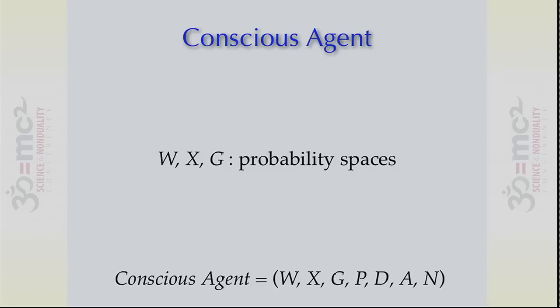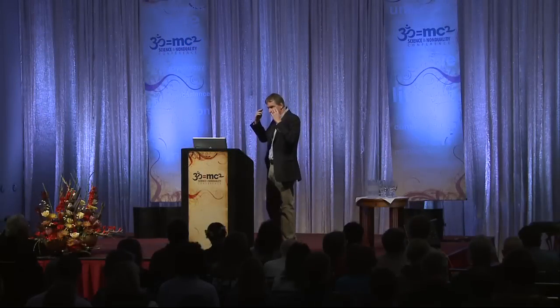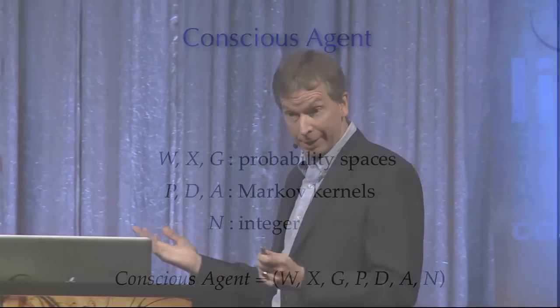I'll assume that W, X, and G are probability spaces, so I can talk about the probability of having this experience or that, of making a certain decision, or changing the world. The maps — the perception, decision, and action maps — are all Markovian kernels, the most general formalism that allows probabilistic changes from one to the other. For those who know information theory and communication theory, these Markovian kernels are identical to communication channels. If you know linear algebra, each of these is just a matrix whose rows sum to one. And N is an integer — you're just counting up the number of experiences you have.